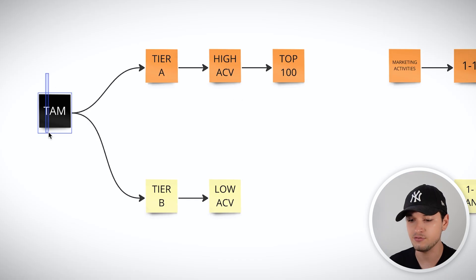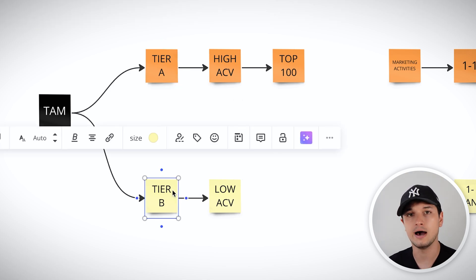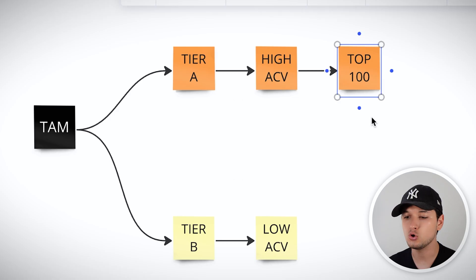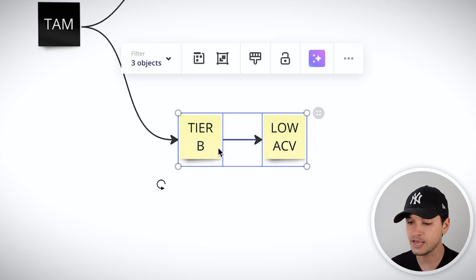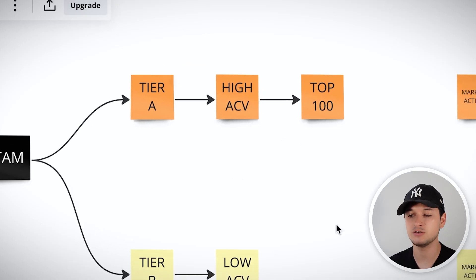The next powerful thing you can do with Clay is separate accounts and prospects into tiers, because some accounts are more important and deserve a different budget. You can divide your total addressable market into tier A, tier B, and tier C. Tier A might be the top 100 companies spending $1 million per year in ads — very high average contract value. Tier B would be companies spending $30k or less — lower ACV, higher volume.